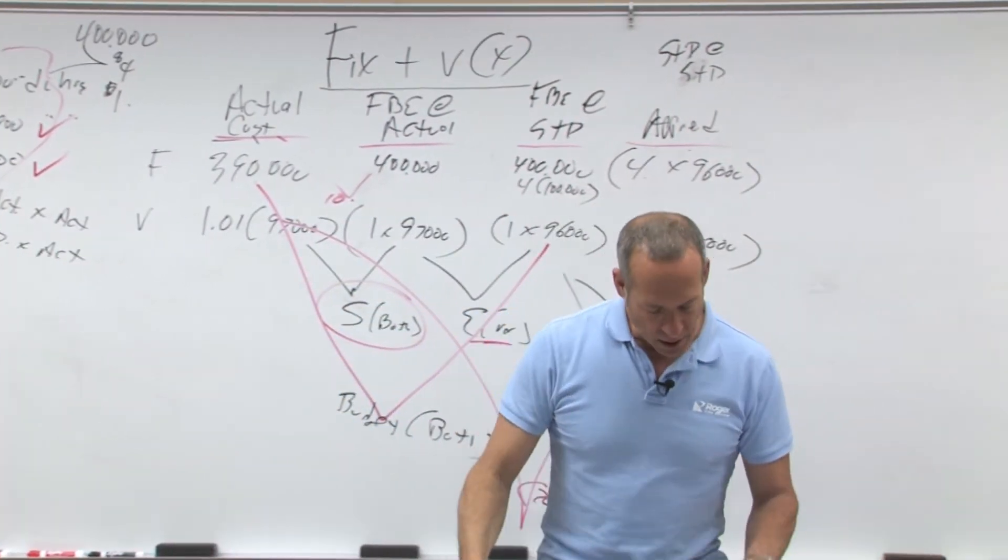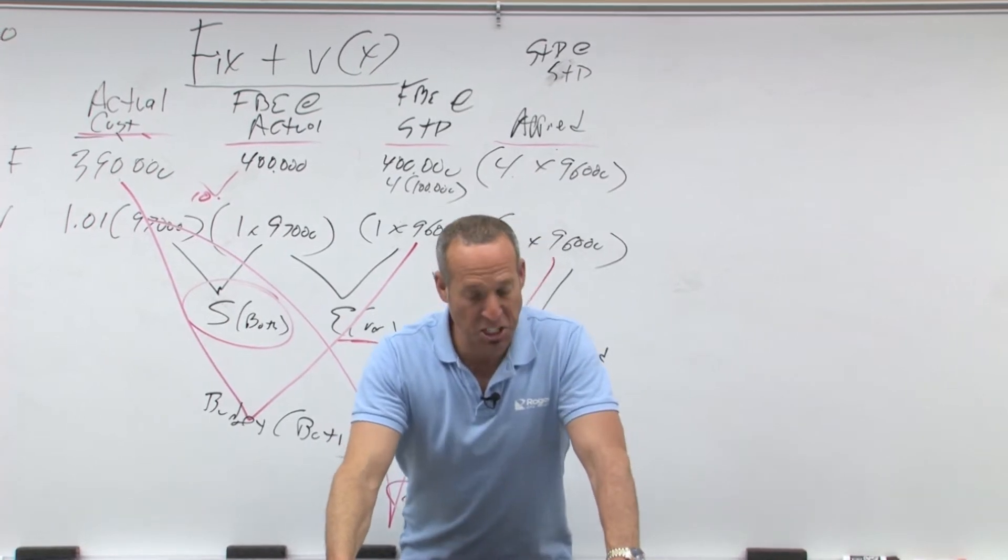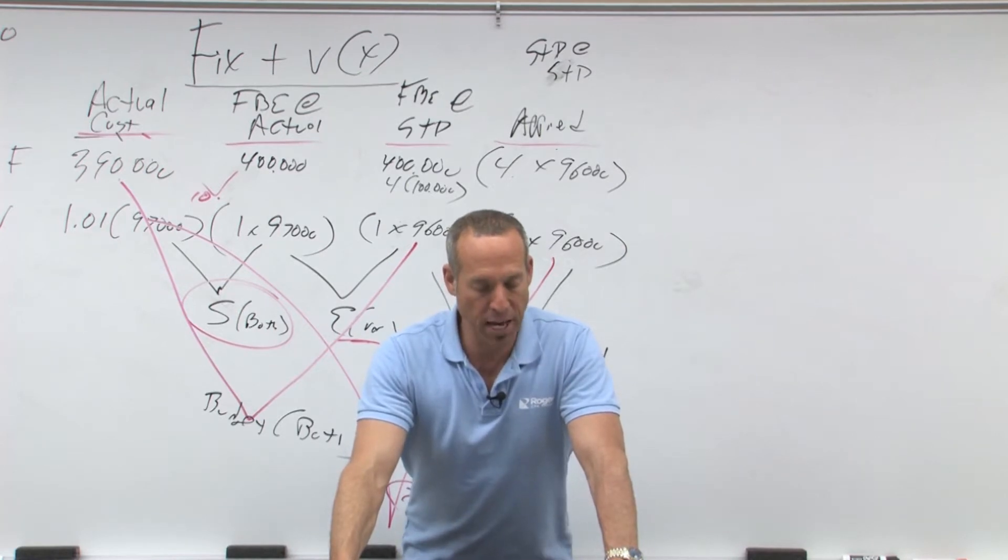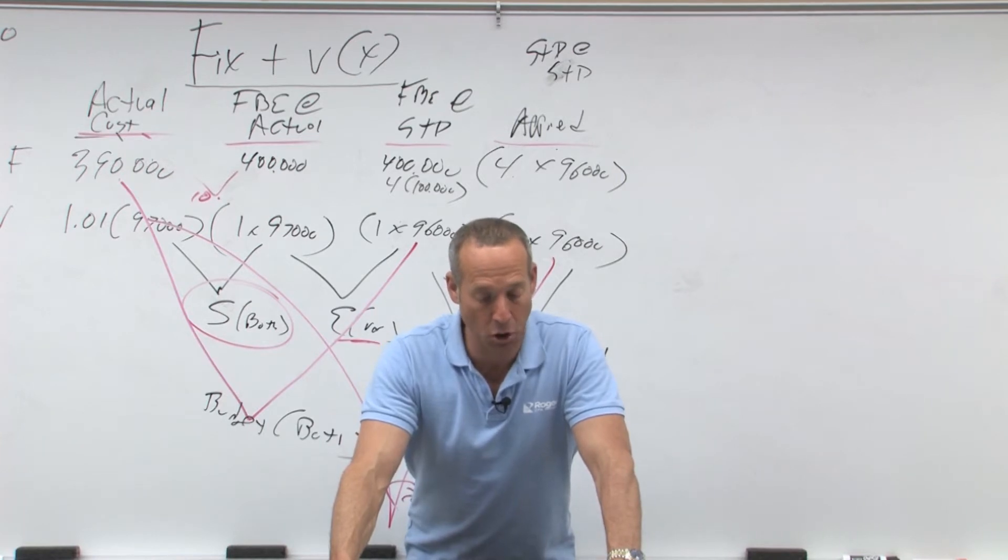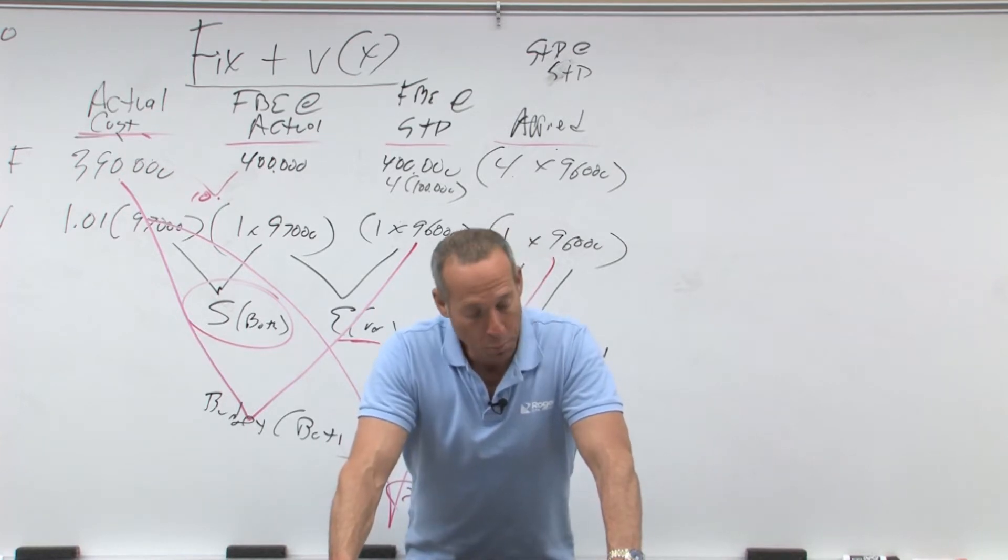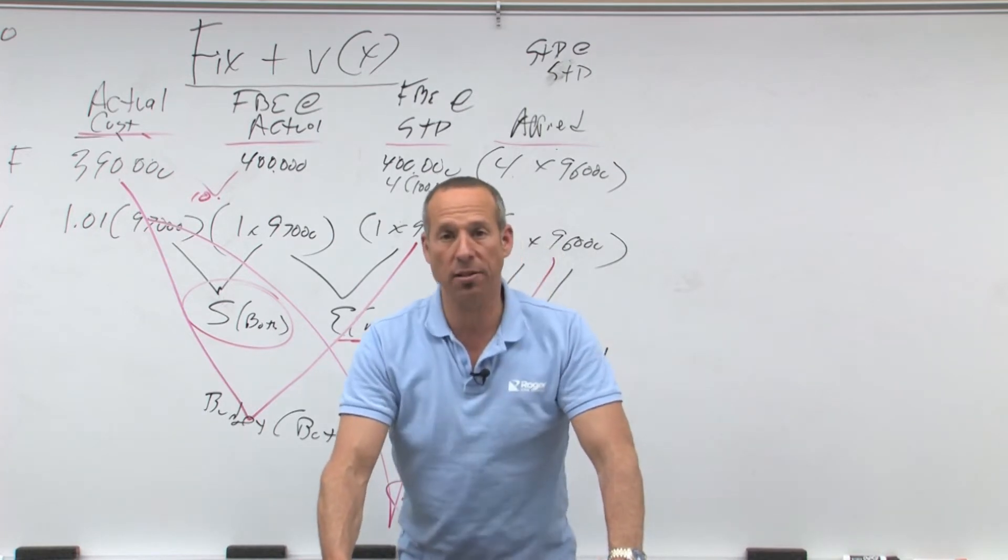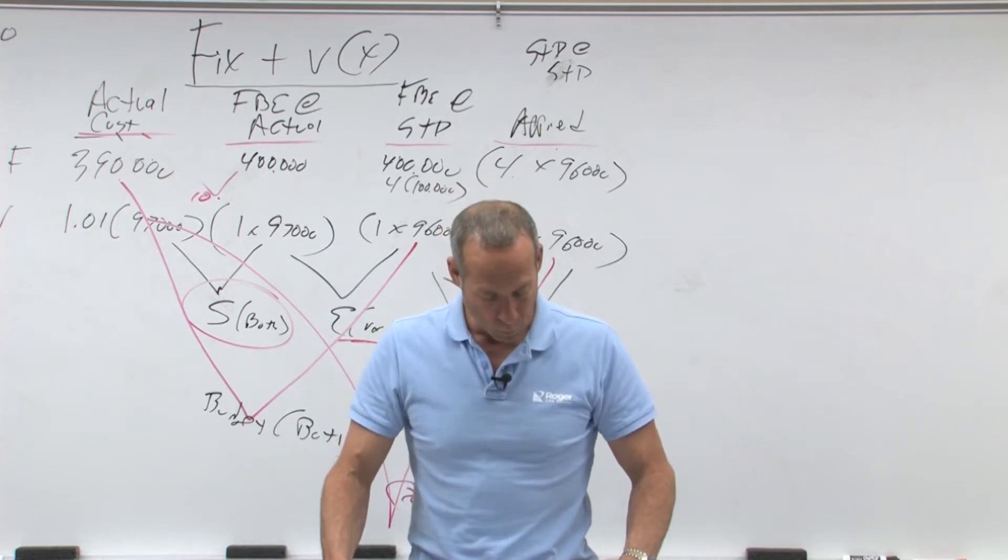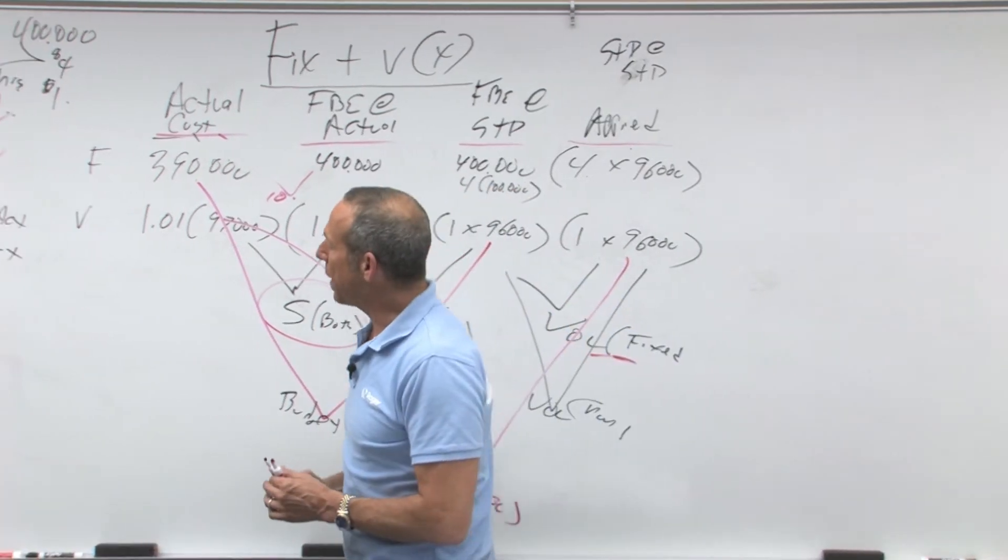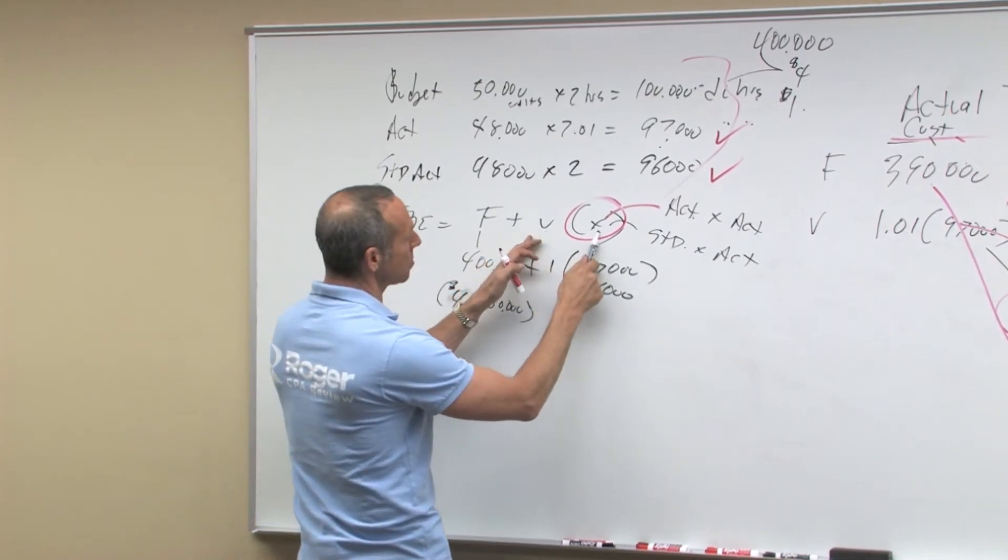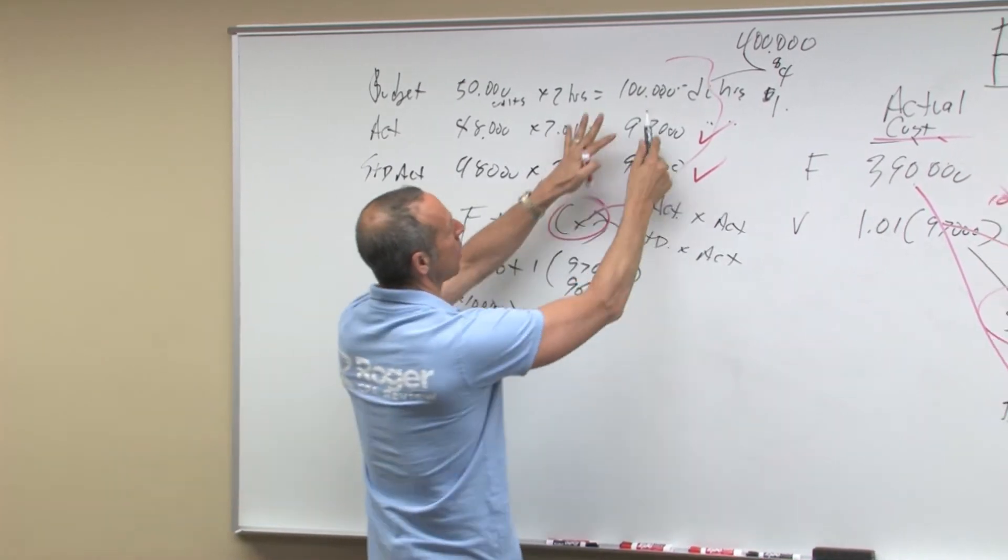Second, the total overhead is estimated on the basis of expected fixed overhead for the period and variable overhead per unit of the base. If, for example, the entity paid rent of $400,000 per year and utilities of a dollar per hour at 100,000 hours, total overhead would be $400,000 rent plus $100,000 utilities. Fixed is $400,000, variable is a dollar at 100,000, that equals $500,000.